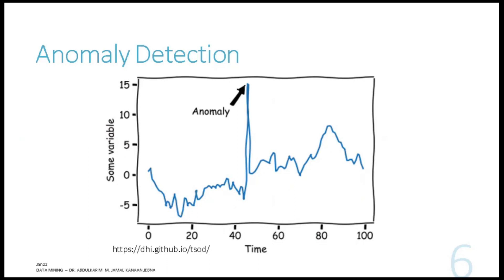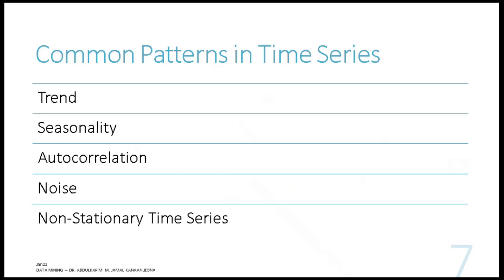For example, if you are looking at share price over the last decade, around 2008 there was a global financial crisis, so you would see a sudden drop in share price. That was an incident — not something that happens every day — and it can be marked as an outlier.